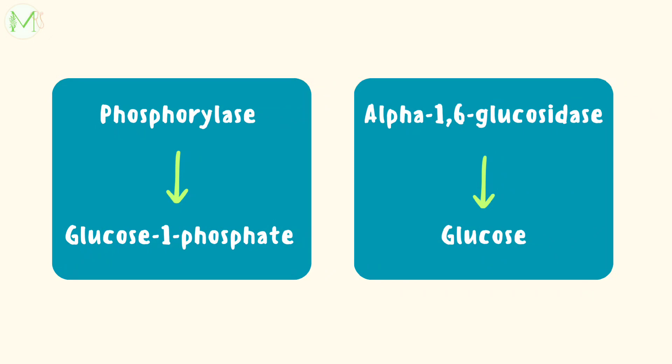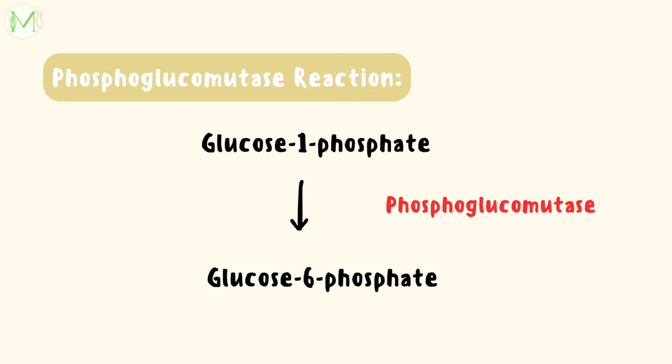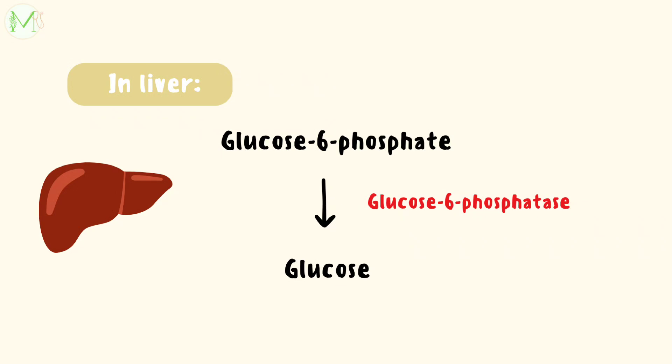In the next step, glucose-1-phosphate is converted to glucose-6-phosphate by an enzyme called phosphoglucomutase. This glucose-6-phosphate is then hydrolyzed to glucose by an enzyme called hepatic glucose-6-phosphatase. This free glucose gets released into the bloodstream.